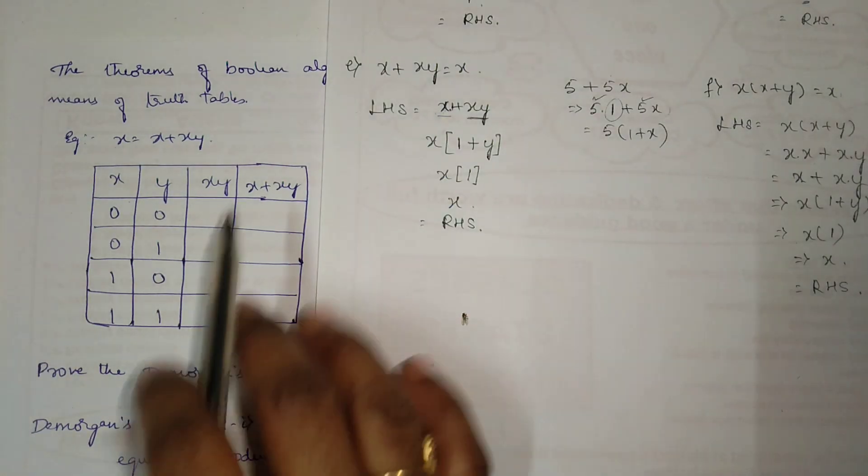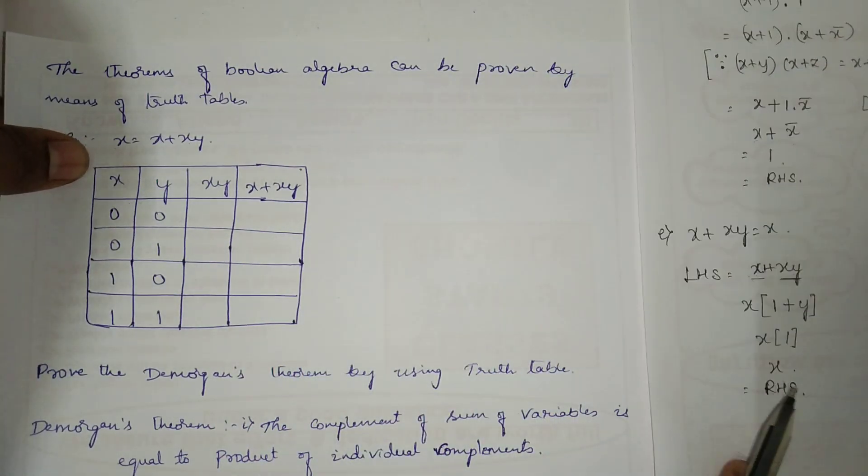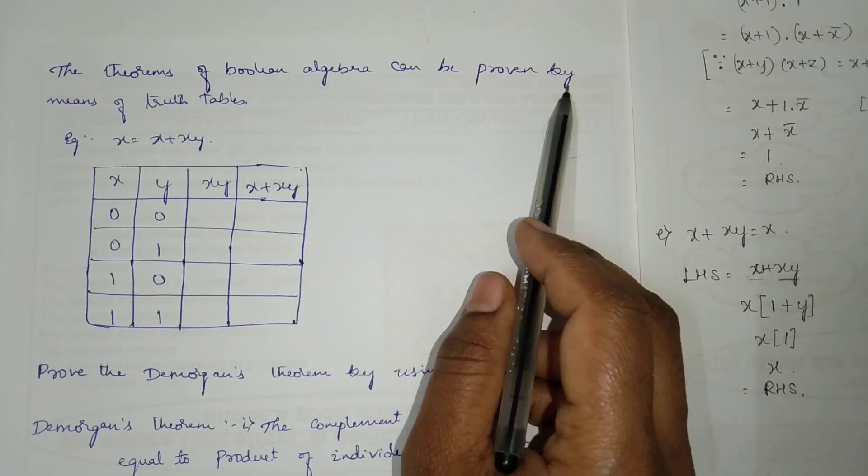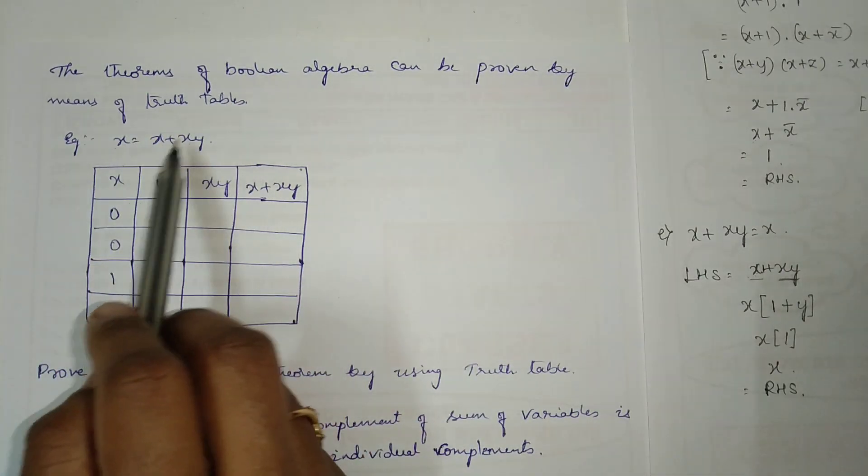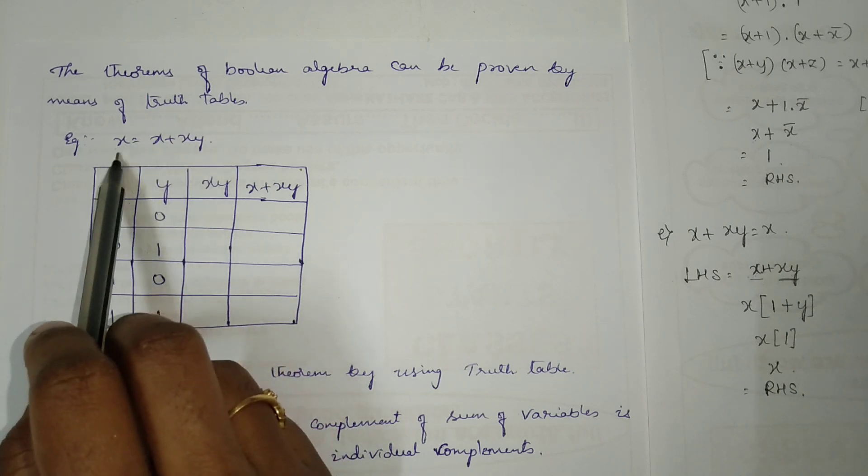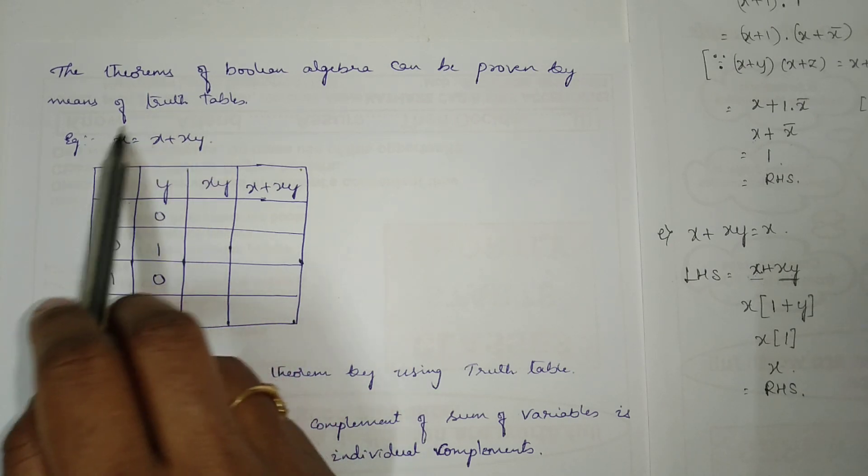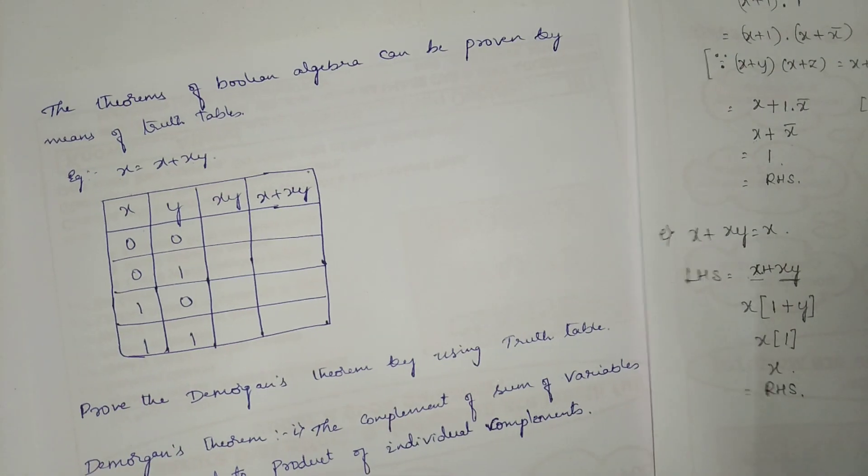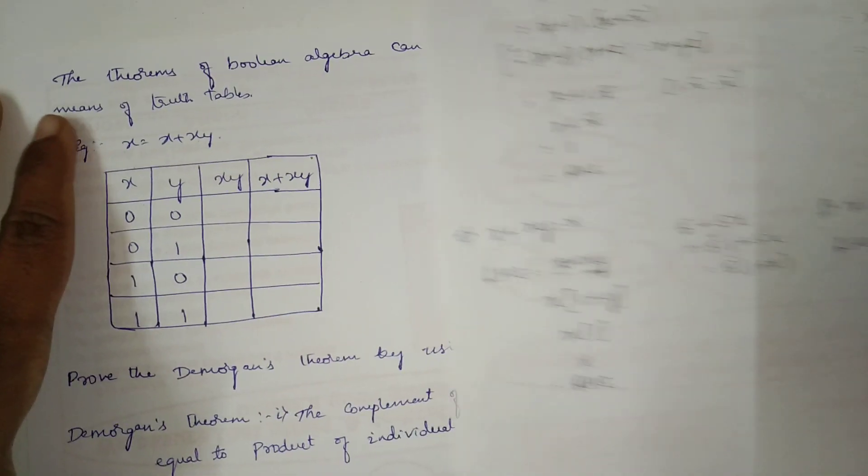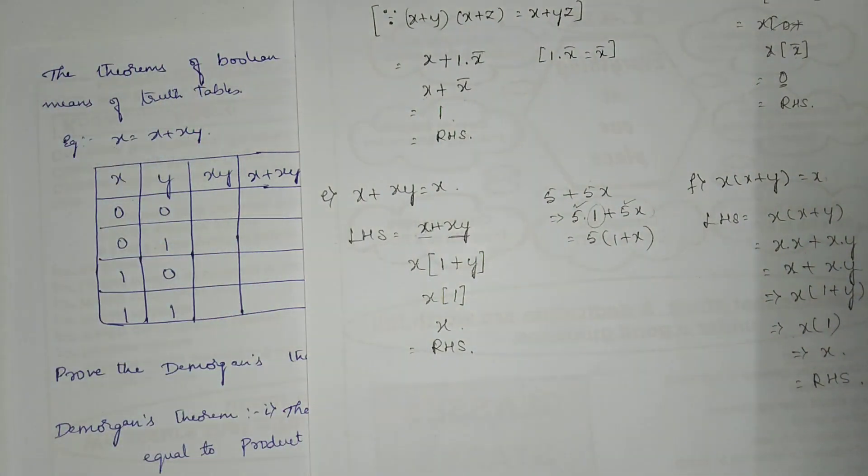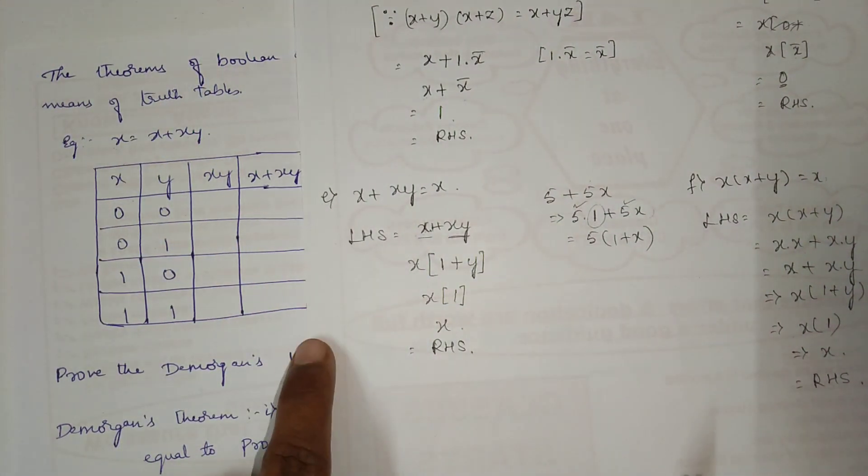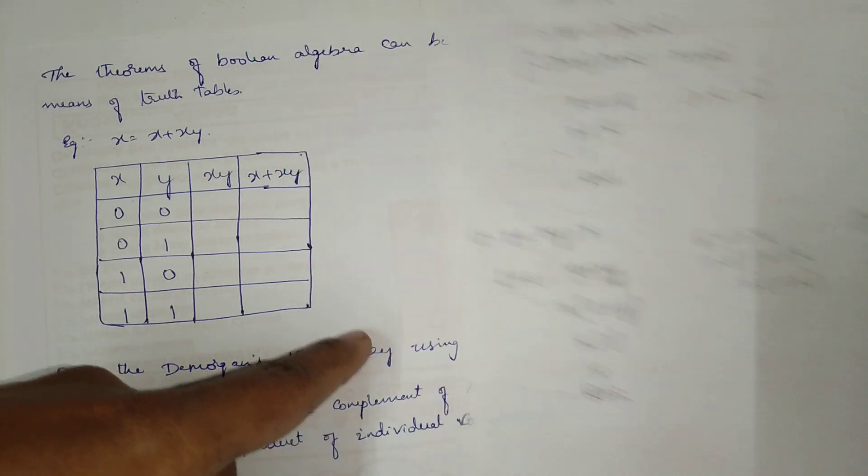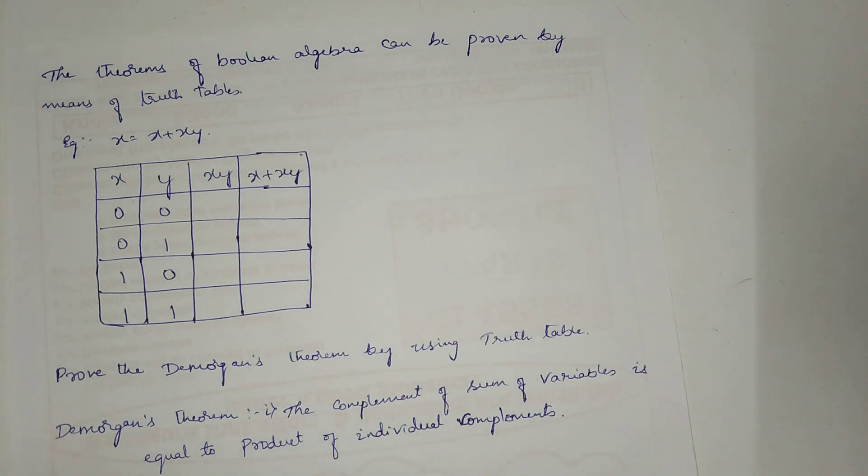See here, they have asked us to prove the theorems of Boolean algebra can be proved by means of truth table also. So here I am telling you the way how to prove this using a truth table method. x is equal to x plus xy. In the last video, I had already told you how to solve this problem by using the basic identities. Now, we will discuss how to solve this by using the truth table.